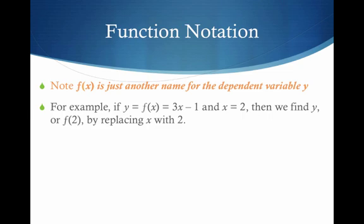For example, if y equals f of x equals 3x minus 1, so if I'm just letting my function be 3x minus 1 and x equals 2, then we can find y or I can write it as f of 2. And I replace the x with the 2. Note again, I read it as f of 2 or the function value at 2. I can plug 2 in for x and get 3 times 2 minus 1 or what is 5.